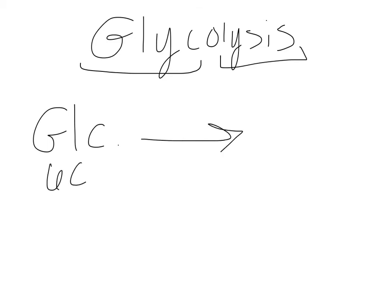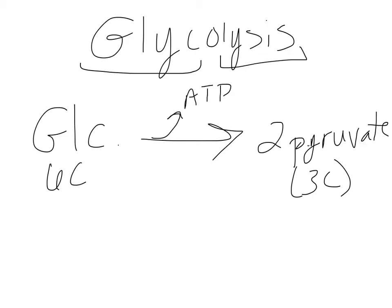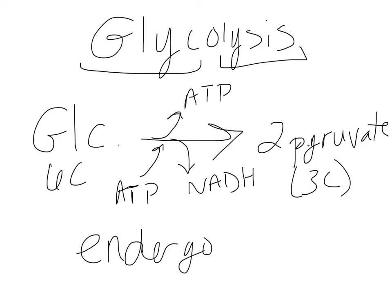To sum up glycolysis: glucose comes in, and since it's an endergonic reaction, two ATPs are used in the energy investment. Then we harness energy — four ATPs are produced, giving a net gain of two ATP. We reduce two NAD+ molecules to NADH, because we're making two pyruvate molecules. So we end up with two electron acceptors representing stored energy, two ATP, and two pyruvates.